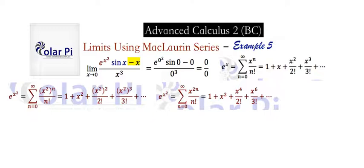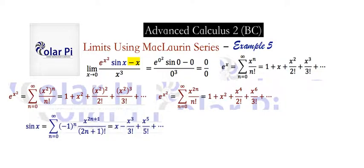The Maclaurin series for sine x — I already made a video on how to derive it, so check that video, I'll link it below. Here's the Maclaurin series for sine x. We need both because we need e to the x squared times sine x, so the Maclaurin series for e to the x squared times sine x we get simply by multiplying the Maclaurin series for e to the x squared by the Maclaurin series for sine x.